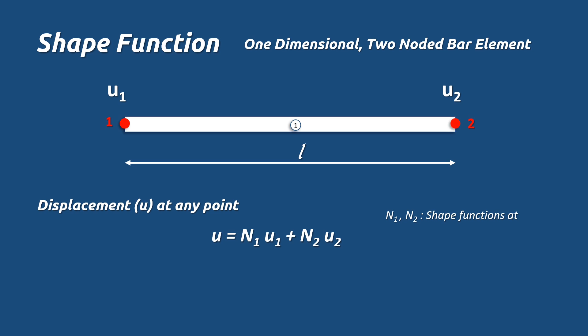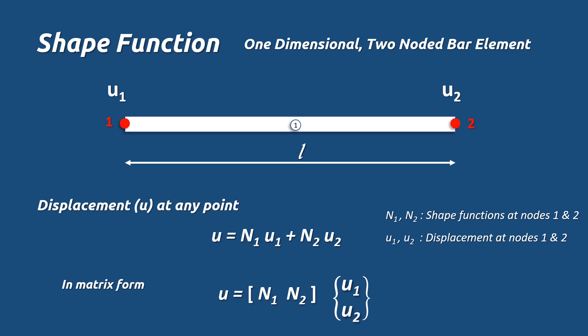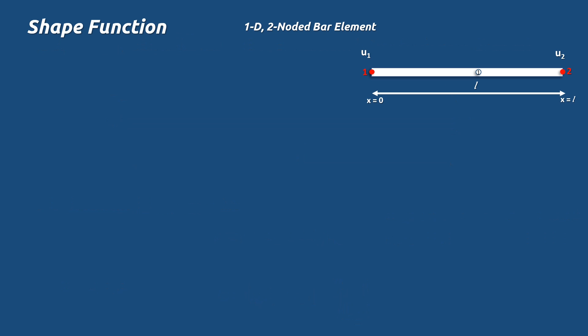Where N1 and N2 are the shape functions at node 1 and 2, and u1 and u2 are the displacements at node 1 and 2. In matrix form: u = [N1  N2] · {u1  u2}. The displacement matrix is a column matrix, represented in curly brackets. This is a one-dimensional element, meaning the nodes can displace in one dimension only, so each node has one degree of freedom, giving a total of two degrees of freedom for this element.